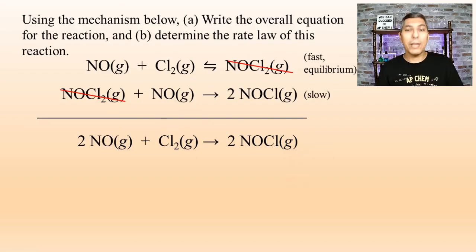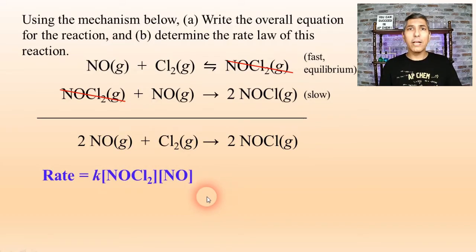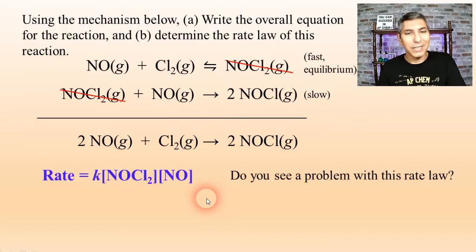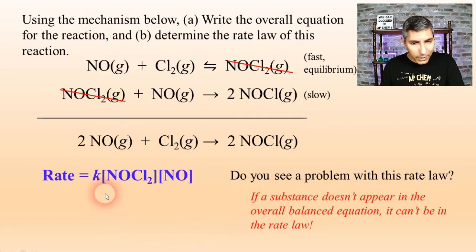Now, part B says, determine the rate law of this reaction. Well, you might notice that in this case, we have, once again, two steps. The first step is a reversible process. It's a fast step. It's an equilibrium step. We'll talk more about equilibrium coming up here in a few units. But, either way, the slow step is the one that determines the rate. So rate equals K times NOCl2 times NO. So we can write that as the rate law. Now, as you look at that rate law, you might find that there's a little problem with that. Because we have a substance written in that rate law that does not appear in the overall balanced equation. This NOCl2 is a reaction intermediate. And it can't appear in the overall rate law since it's a reaction intermediate. So we have to do something to that.